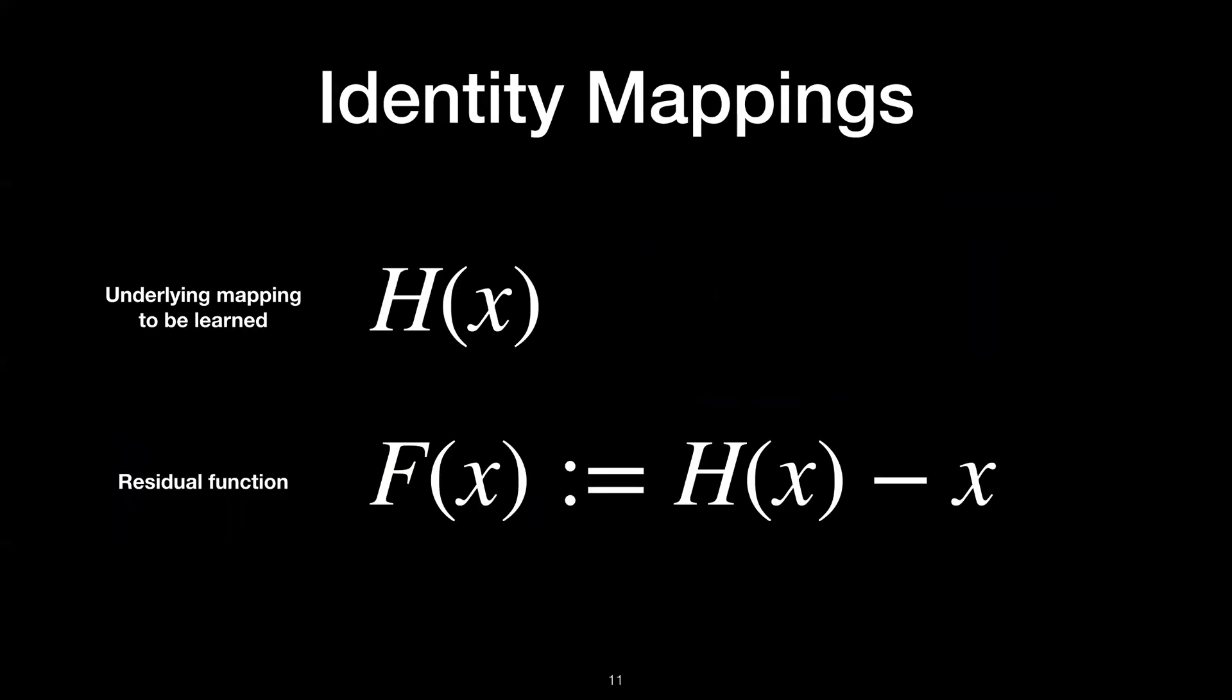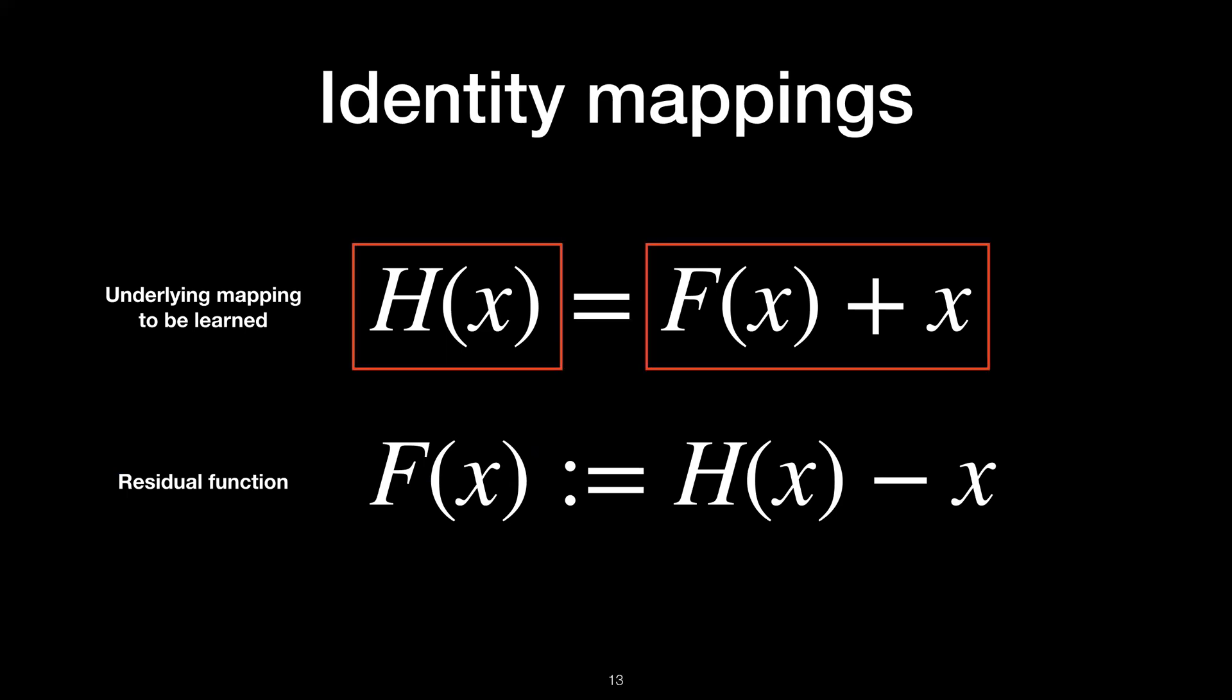In order to make networks learn identity mappings more explicitly, the authors formulate a residual function. Let's say one or a few layers should learn the desired function h(x). Then, assuming that input and output have the same dimensions, the residual function F(x) is defined as the output of h(x) minus x. Then, h(x) is now equal to F(x) plus x. As you can see, the expressiveness of the left formulation and the right formulation is identical. However, from optimization perspective, the ease of learning h(x) or the ease of learning F(x) on the right side is completely different.